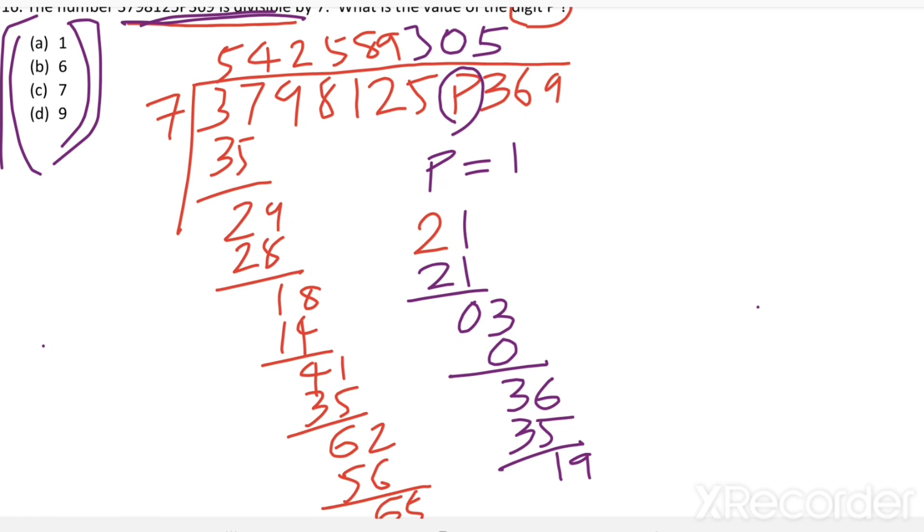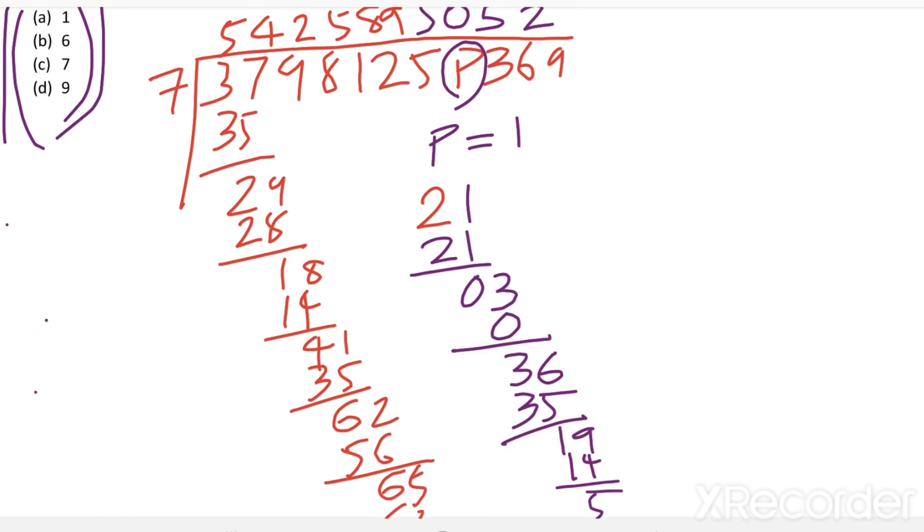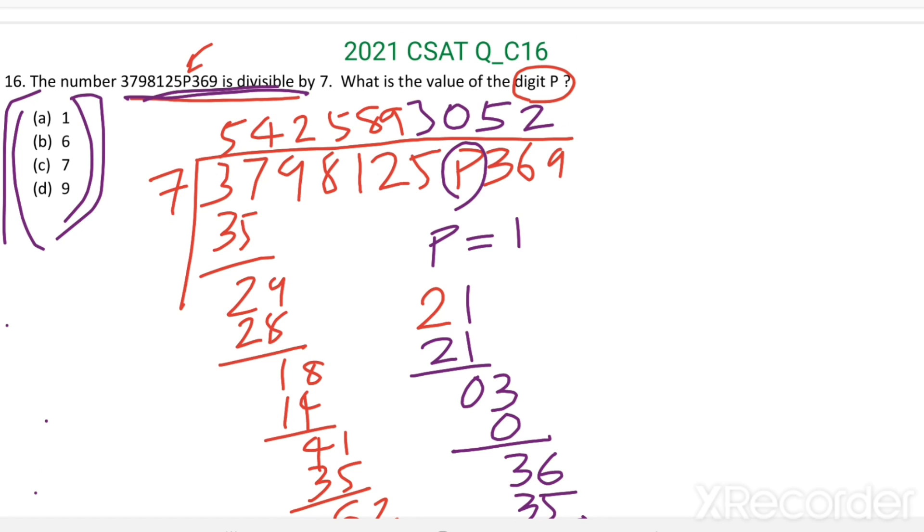In 19, there are 2 7s. 2 7s are 14. Then we are getting remainder equal to 5. When P equal to 1, we are getting remainder equal to 5. That means, when P equal to 6.